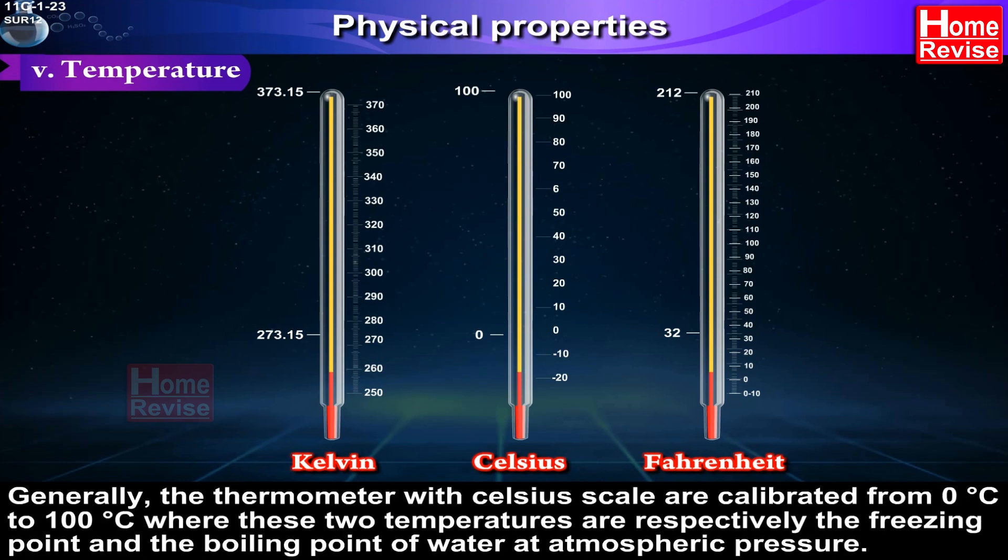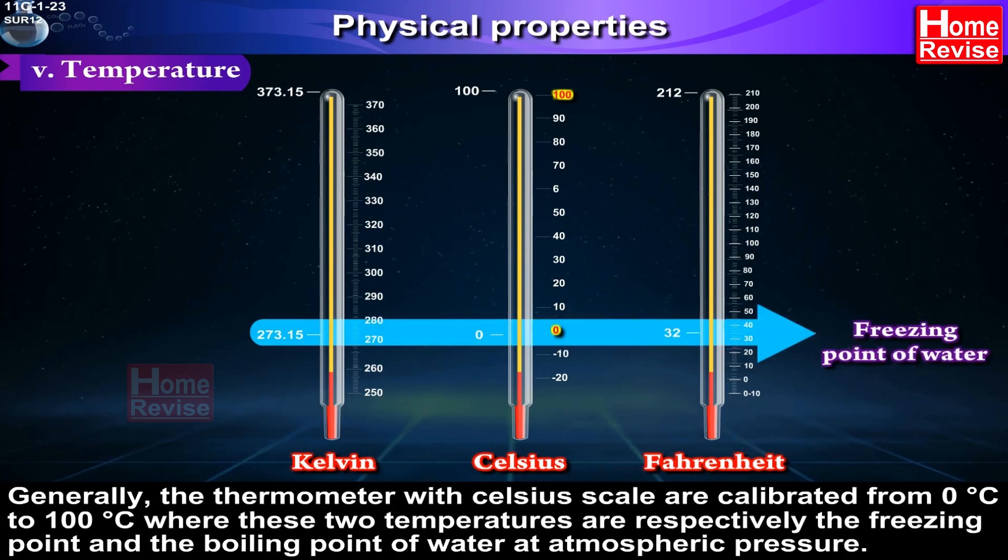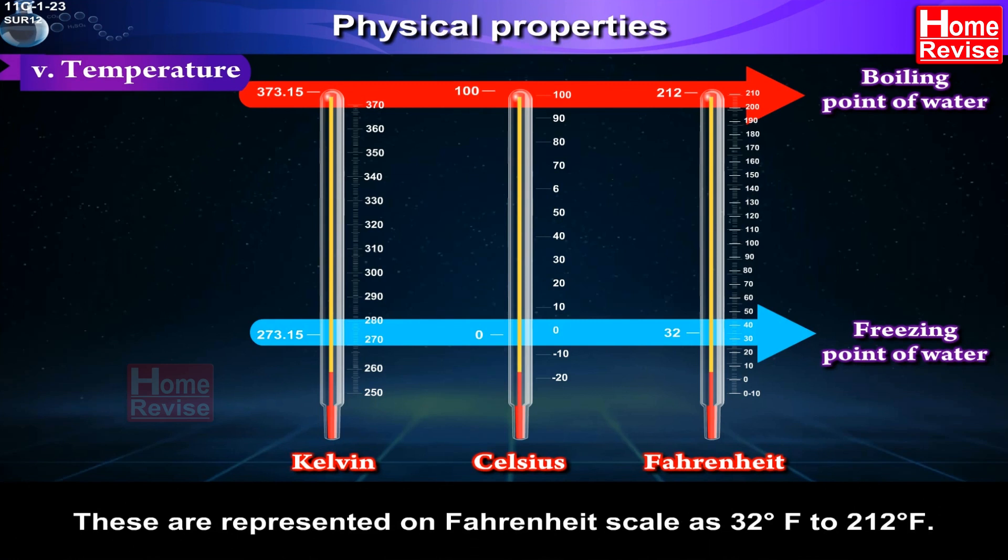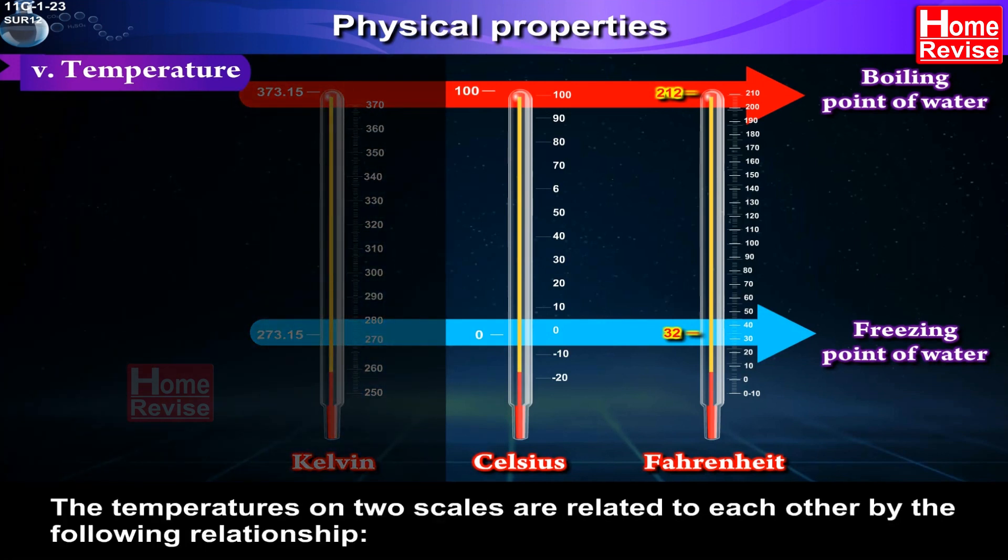Generally, the thermometers with Celsius scale are calibrated from 0 degrees centigrade to 100 degrees centigrade, where these two temperatures are respectively the freezing point and the boiling point of water at atmospheric pressure. These are represented on Fahrenheit scale as 32 degrees Fahrenheit to 212 degrees Fahrenheit. The temperatures on two scales are related to each other by the following relationship.